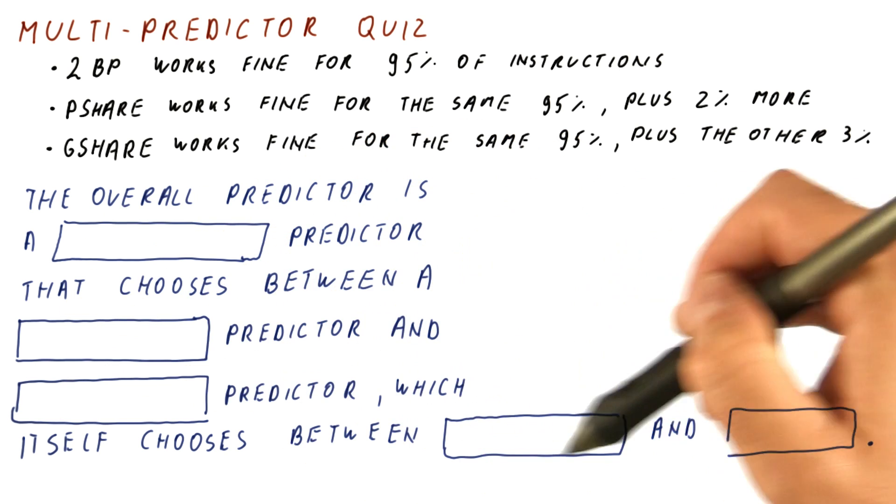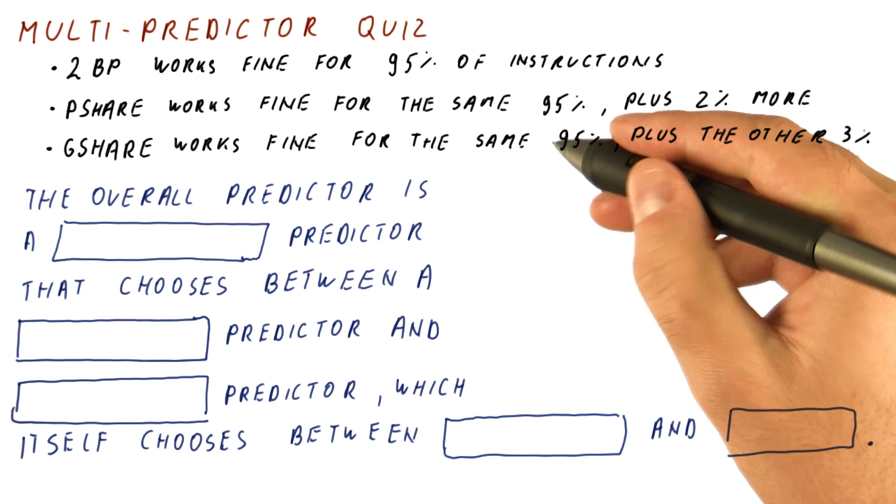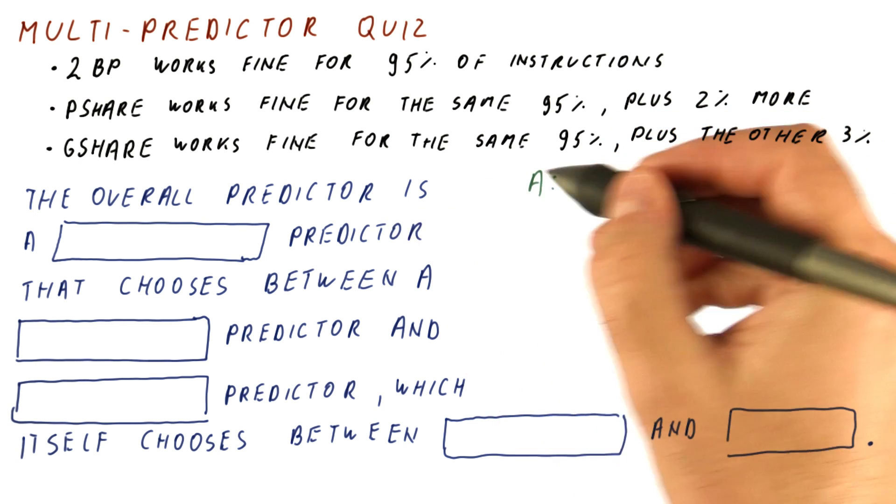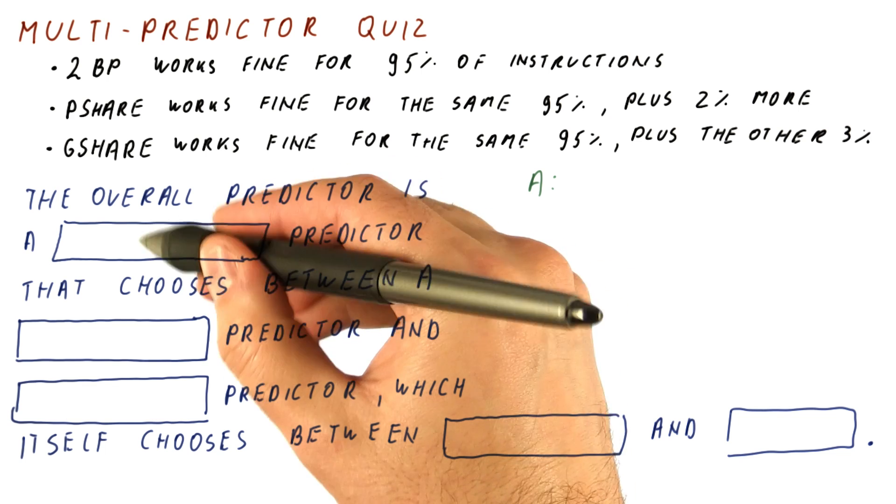Instead of writing in the names of the predictors, just select among the following. For each of them, say if it's A, B, C, D, or E.